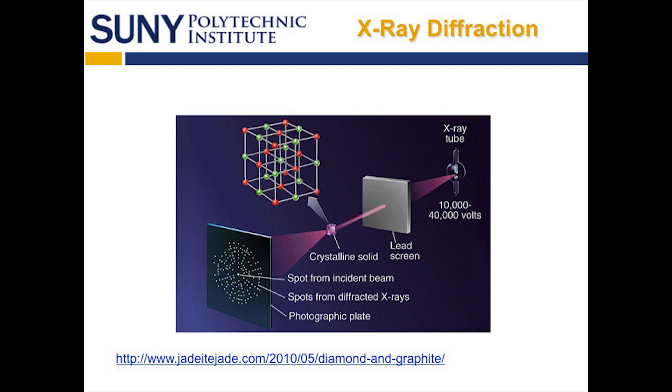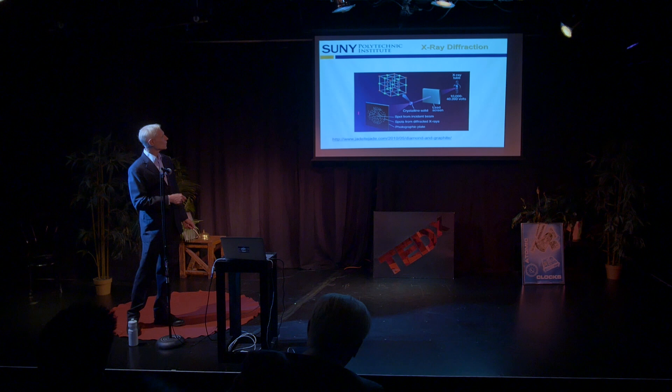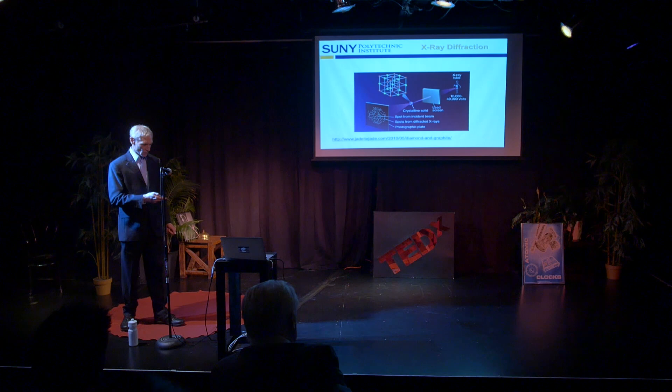The atomic arrangement changes the material's properties, so it's really important to know what that atomic arrangement is. The way that people understood atomic arrangements — in fact, the way that was used to understand the DNA structure — was X-ray diffraction. X-rays are light, very high energy; you put them through a crystal, and the crystal structure diffracts those X-rays. That periodic array of diffraction peaks changes with the periodic array of the crystal you're trying to understand. That's how you can tell the difference between those different carbon structures.